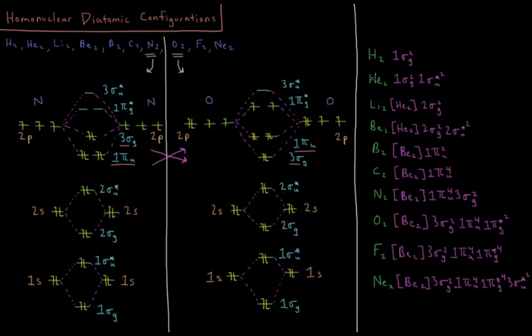For helium, we have four electrons, two from each individual helium atom. So we fill up the 1sσg and 1sσu* bonding and antibonding orbitals, 1sσg2, 1sσu*2.